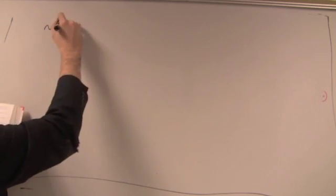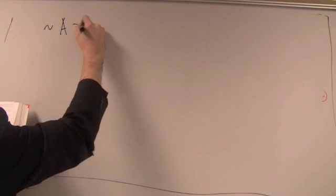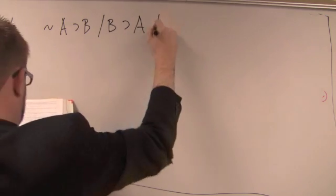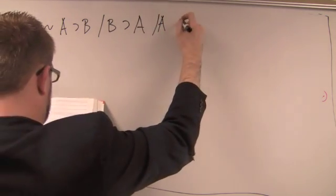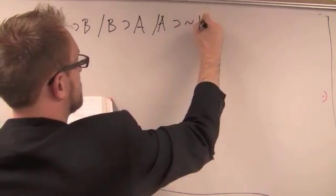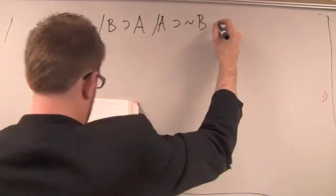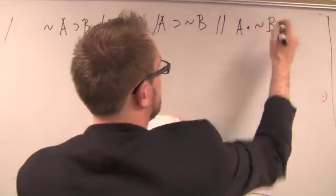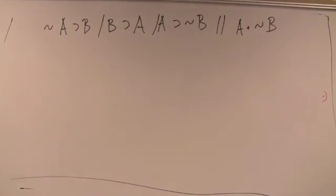Here's the first premise: negation A therefore B. B therefore A. A therefore negation B. Conclusion is A and not B. So this is our argument.